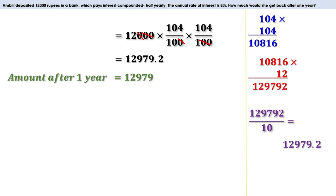Suppose we want to find how much Ambly gets after one and a half years. There are three half years in one and a half years, so we take N as 3. The amount will be 12,000 into (1 plus 4 by 100) all raised to 3. Similarly, we can calculate amounts for different periods. There are also schemes where interest is added every three months — this is called quarterly compounding. Suppose Ambly made her deposit in a bank which compounds interest quarterly; how much would she get after one year?